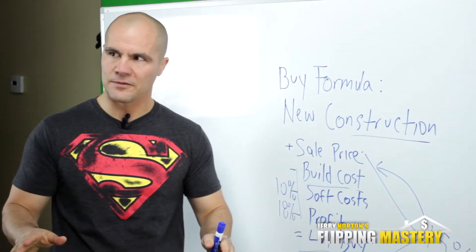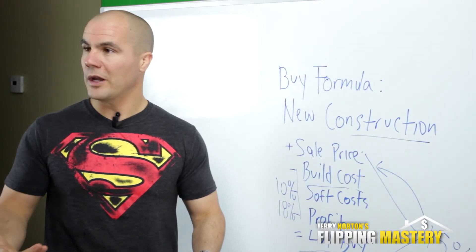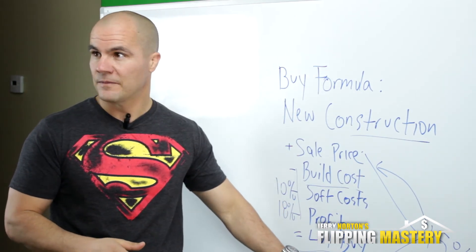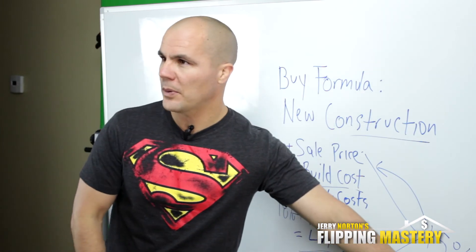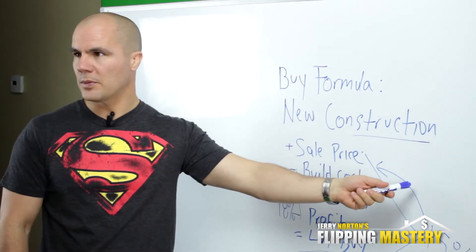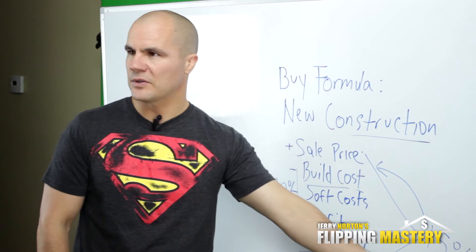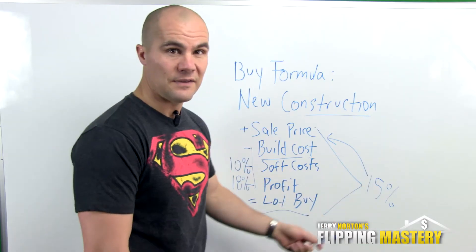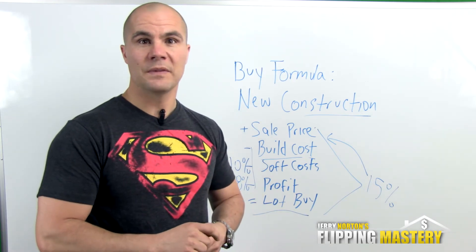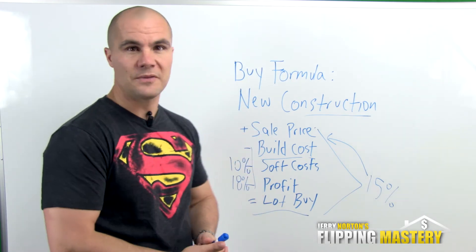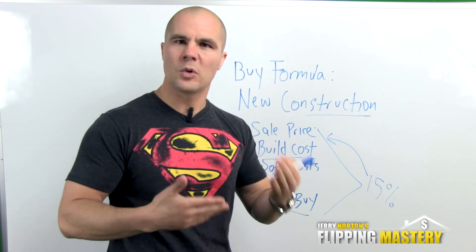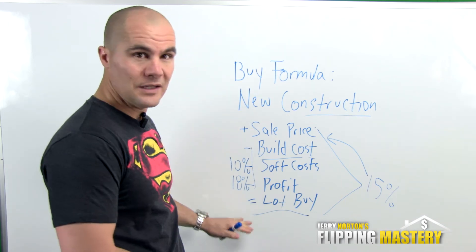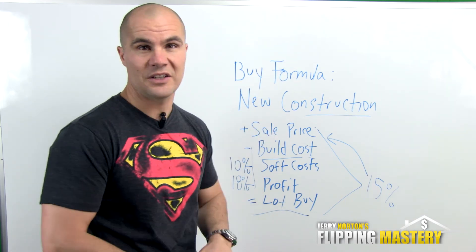Your build cost could vary, so you still have to run the full numbers — this is never a firm rule, just a quick way to gauge if a lot price is in the ballpark. For example, if the sale price is a million dollars, 15% would be $150,000. If you can get that lot for $150,000, you may have a deal. You'll still verify by running all the numbers, but it's a really quick indicator when you're looking at lots.